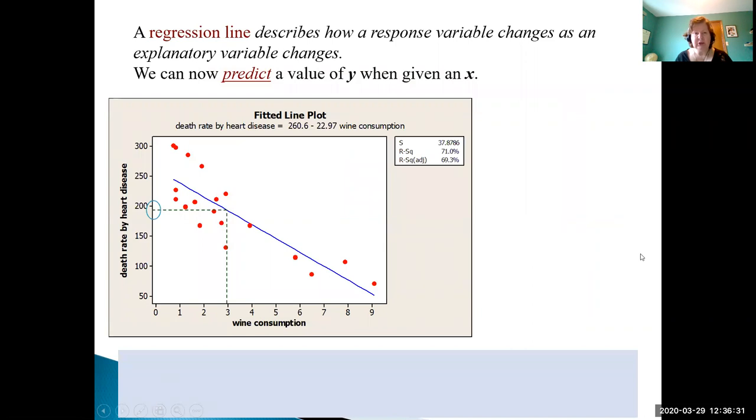Our regression line describes how a response variable changes as an explanatory variable changes. We can now predict a value of y when given an x.